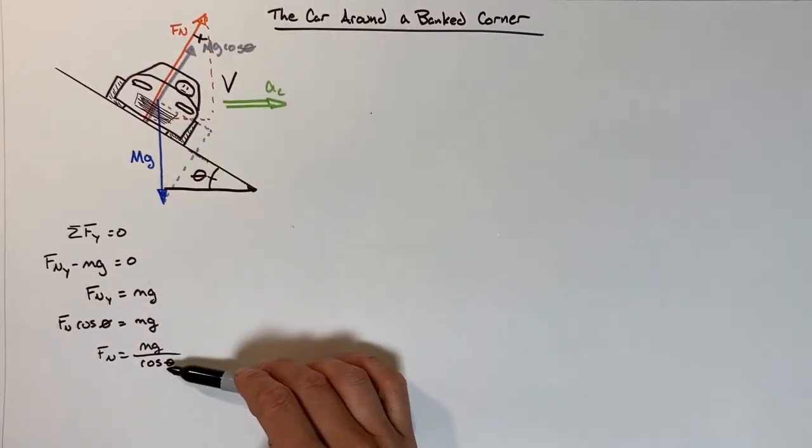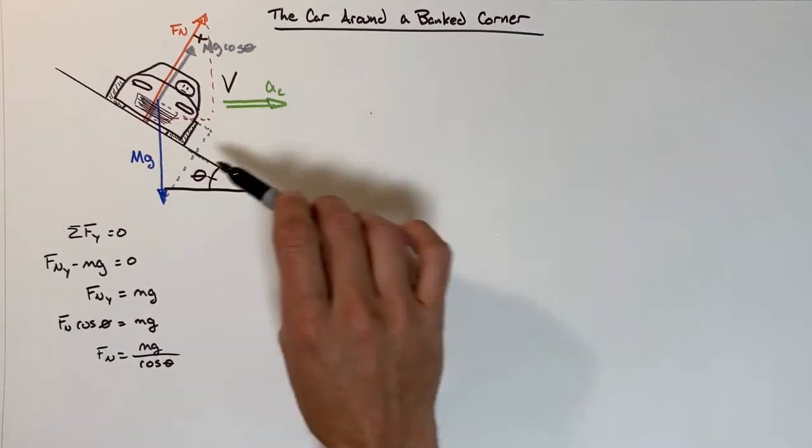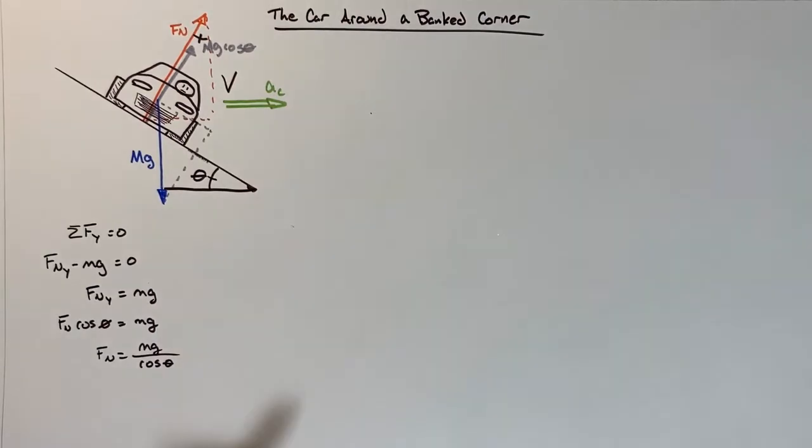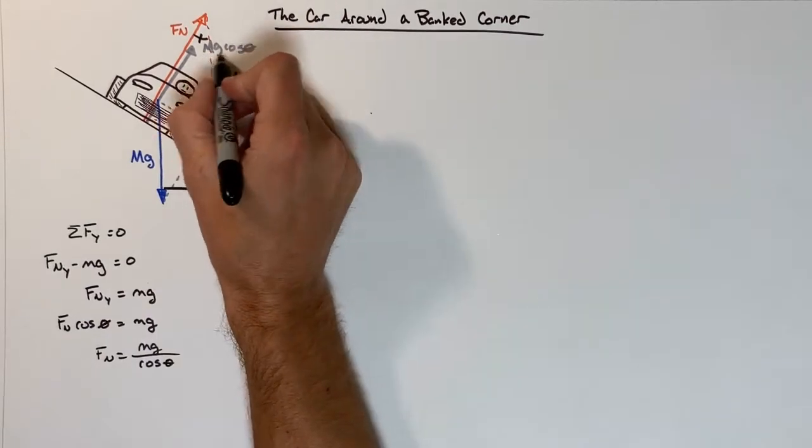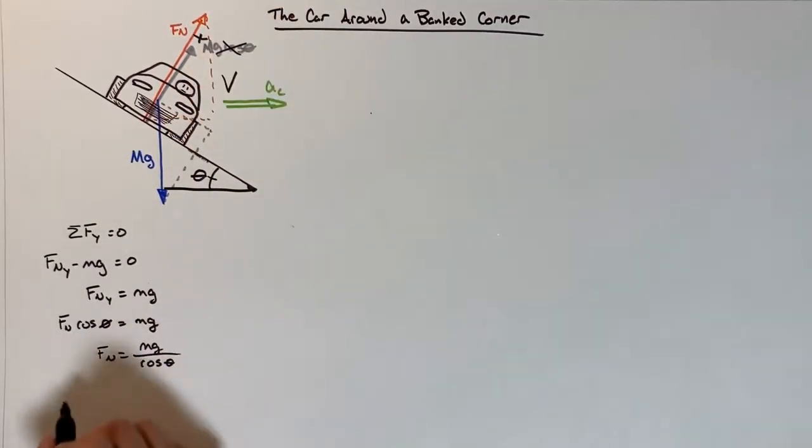You'll see we've got mg over cosine theta for the car going around the corner accelerating horizontally. We've got mg cosine theta if we're allowing this to slide down the hill. They're similar but very different. One is just flat out wrong. This is our value for Fn.